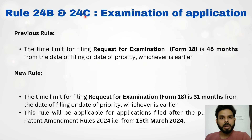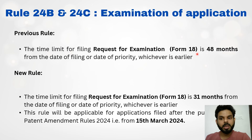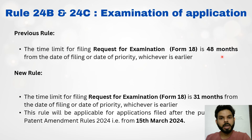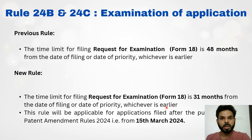The next amendment is made in Rule 24b and 24c, which is examination of application. The previous rule was that the time limit for filing a request for examination — that is, Form 18 — is 48 months from the date of filing or date of priority, whichever is earlier. This rule has been changed: the time limit has been reduced from 48 months to 31 months. So the new rule is that Form 18 must be filed within 31 months from the date of filing or date of priority, whichever is earlier.